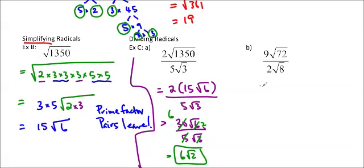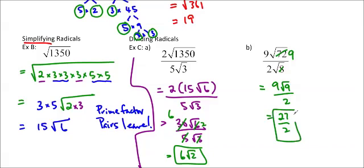We'll do another one. If you want to simplify the inside first, you can, but I'm going to straight up cancel if I can. I know that 72 and 8: I can cancel because 72 is 8 times 9. So I get 9 root 9 over 2, and the root of 9 is 3. So 9 times 3 is 27 over 2. Leave it as an improper fraction — if you put it in mixed numbers, I will take off marks.